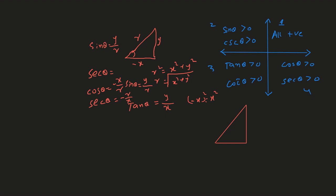Similarly, pause the video and take a triangle in the third quadrant. In the third quadrant, the value of the x-axis is negative and y is also negative, but r is positive. You can verify that tan and cot are positive in the third quadrant and all other trig functions are negative.